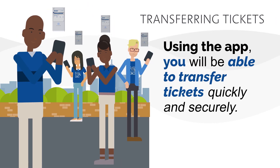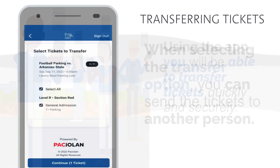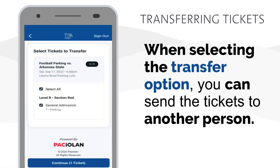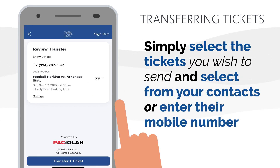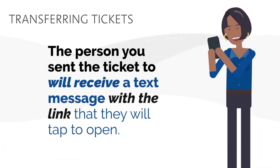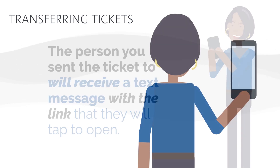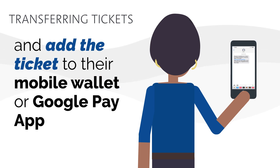Using the app, fans will be able to transfer tickets quickly and securely. When you select the transfer option, you can send the tickets to another person. Simply select the tickets you wish to send and enter their mobile number. The person you sent the ticket to will receive a text message with a link to open. They will then select Accept Transfer, create an account, or log in with their existing ticket account, and add the ticket to their mobile wallet or Google Pay app.